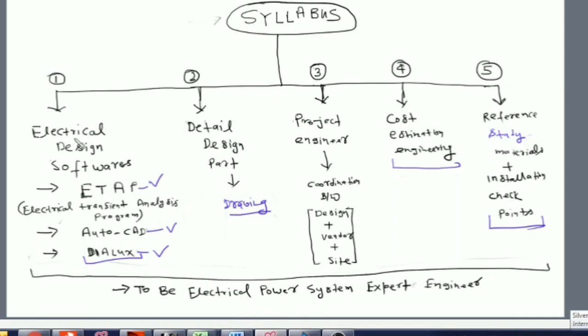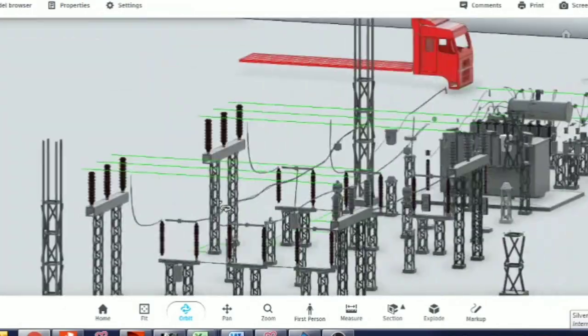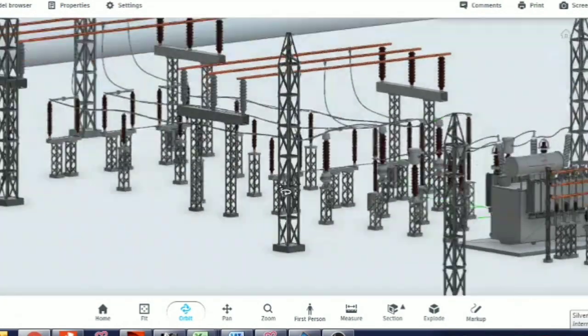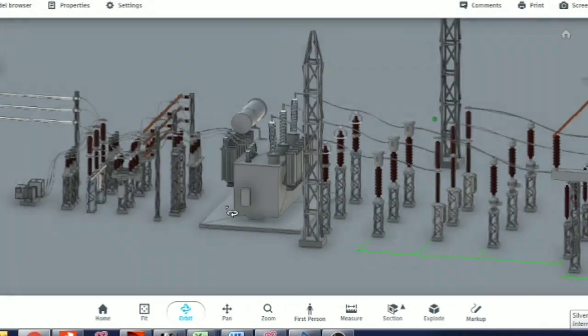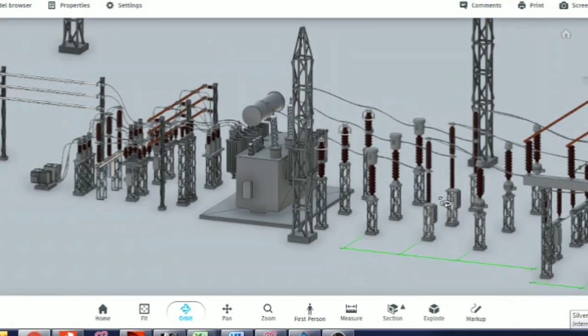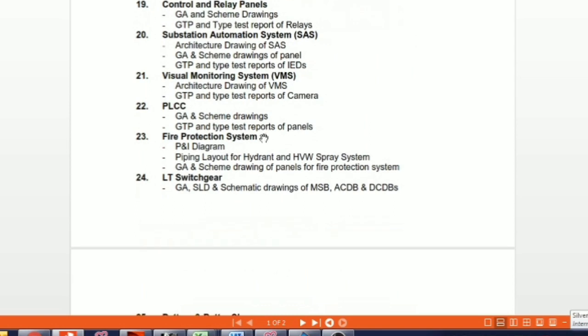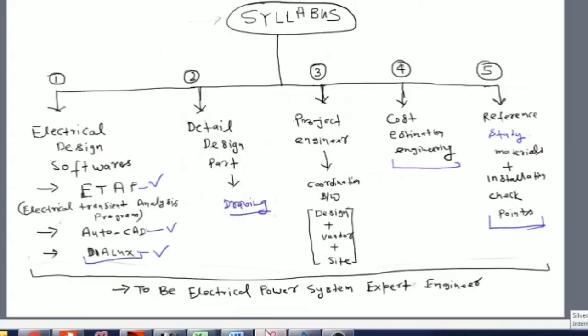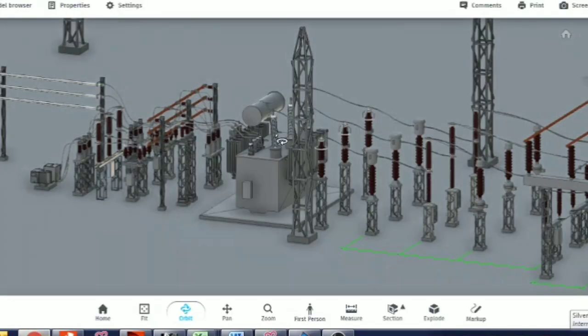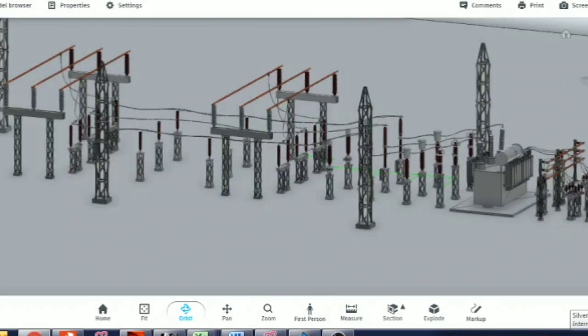Second is the detail designing part. When we do any electrical installation, suppose we have this 220 by 33 kilovolt substation installation, we need construction drawings. Whatever construction drawings are required, we will discuss in module number two, and you will be able to make design drawings for such electrical installations.